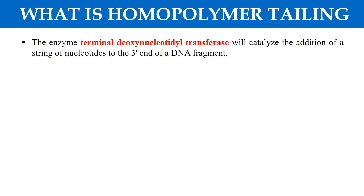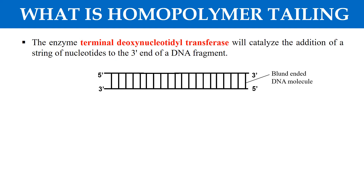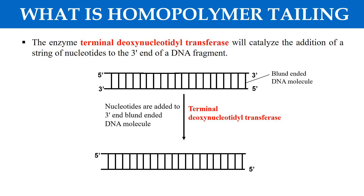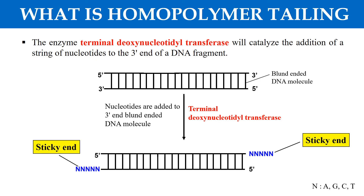The next method is homopolymer tailing, which is also used to create sticky ends. In this method, we add a tail of the same kind of base pairs to the blunt end DNA molecule. With the help of the enzyme terminal deoxynucleotidyl transferase, we add nucleotides to both ends of the blunt end DNA molecule and transform it into a sticky end DNA molecule. The N represents any nucleotide — N can be adenine, guanine, cytosine, or thymidine — so with terminal deoxynucleotidyl transferase, we can add nucleotides to the ends and create sticky ends from a blunt end DNA molecule.